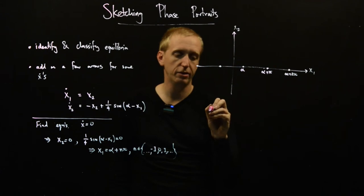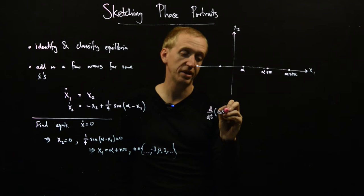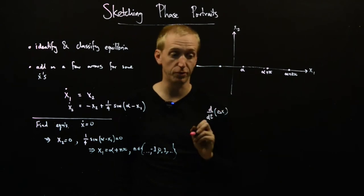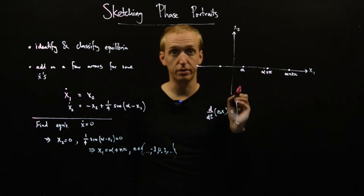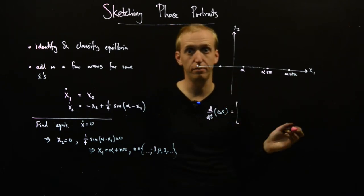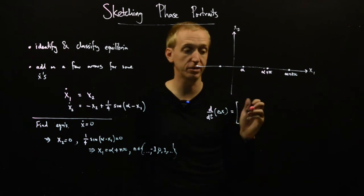And so we know our linearization looks like d by dt delta x, where delta x is our deviation from our equilibrium point. And this, let's use the Jacobian method because it'll be a bit easier when we're finding lots and lots of different linearizations.